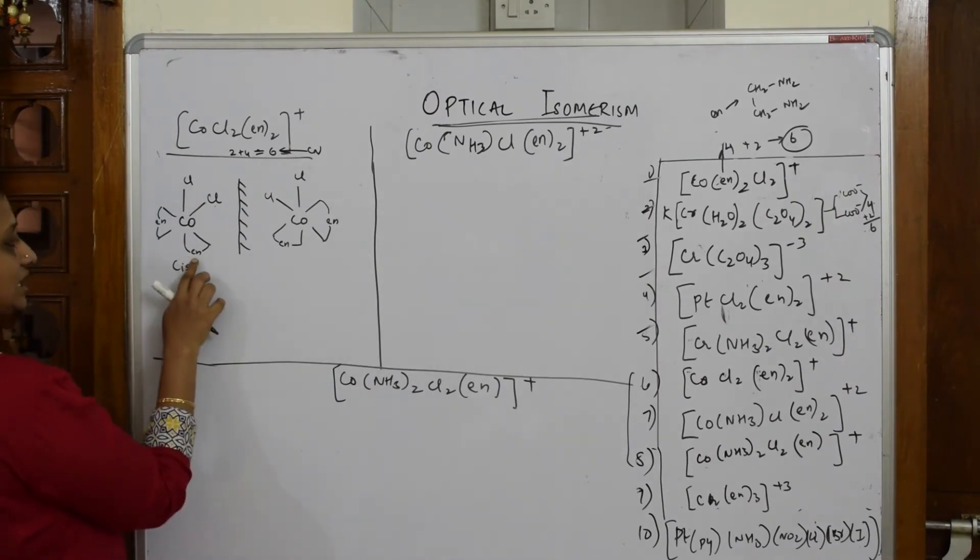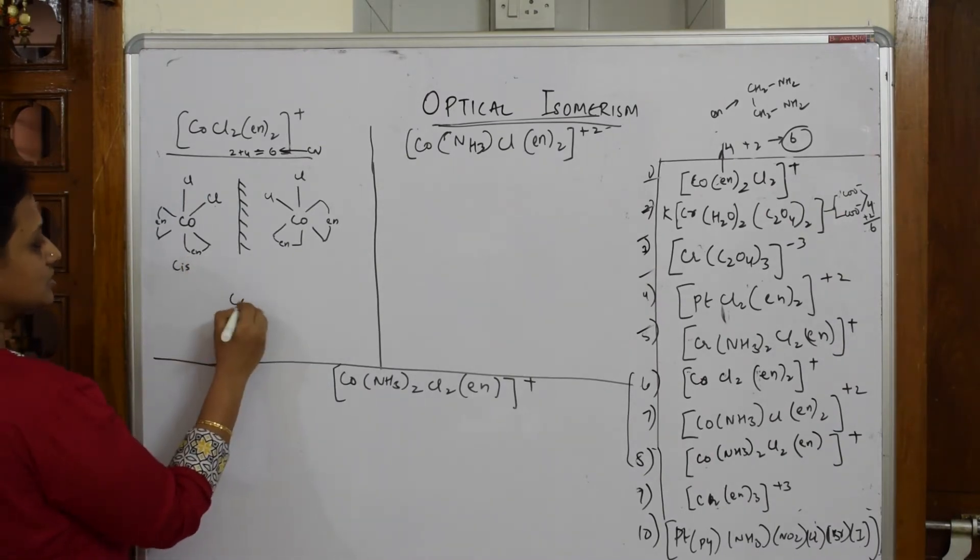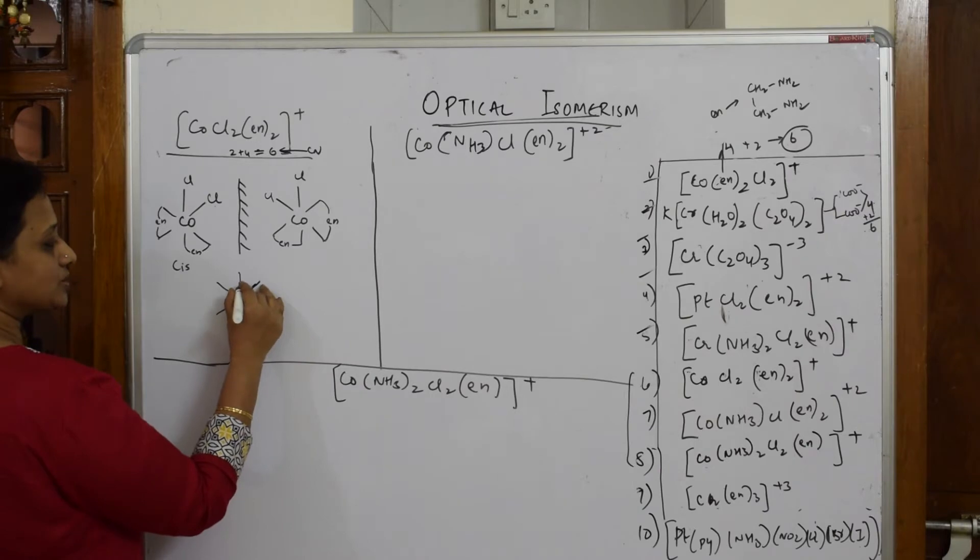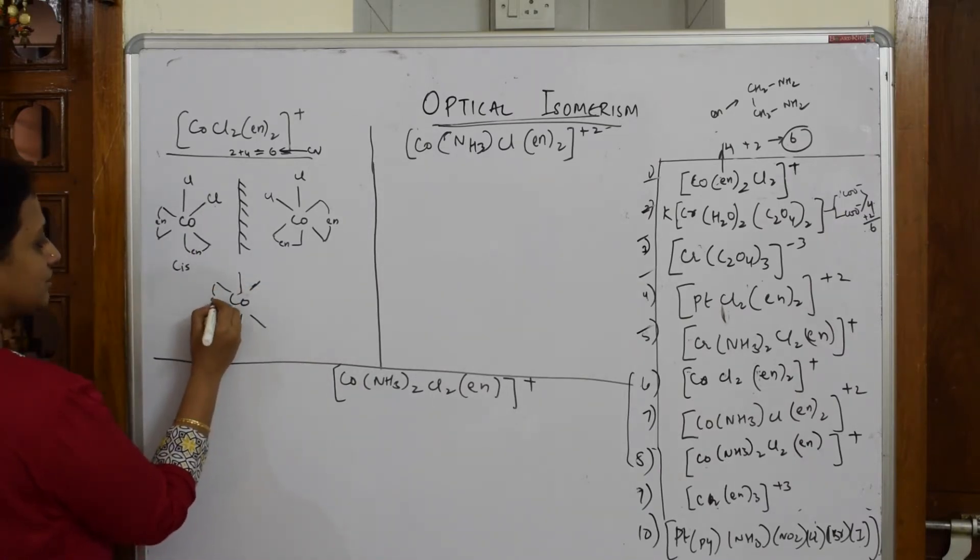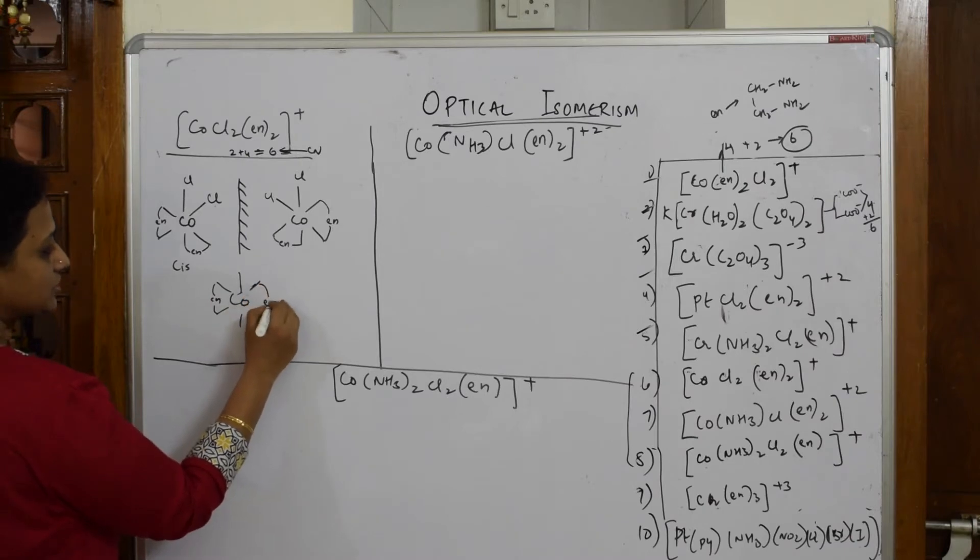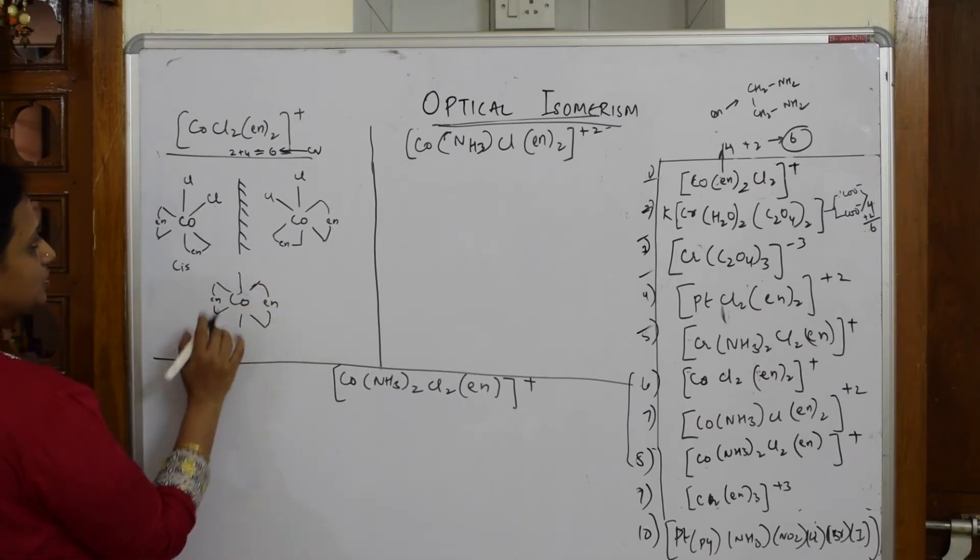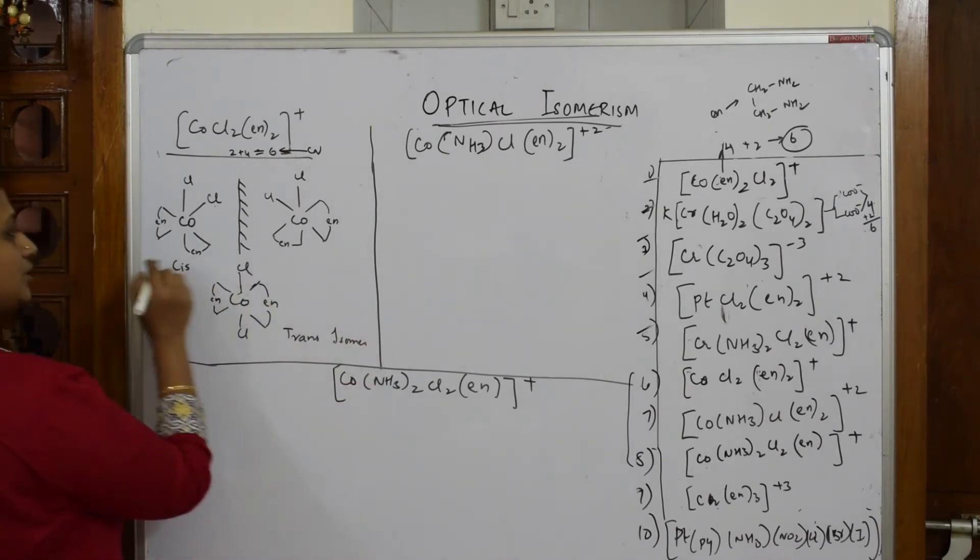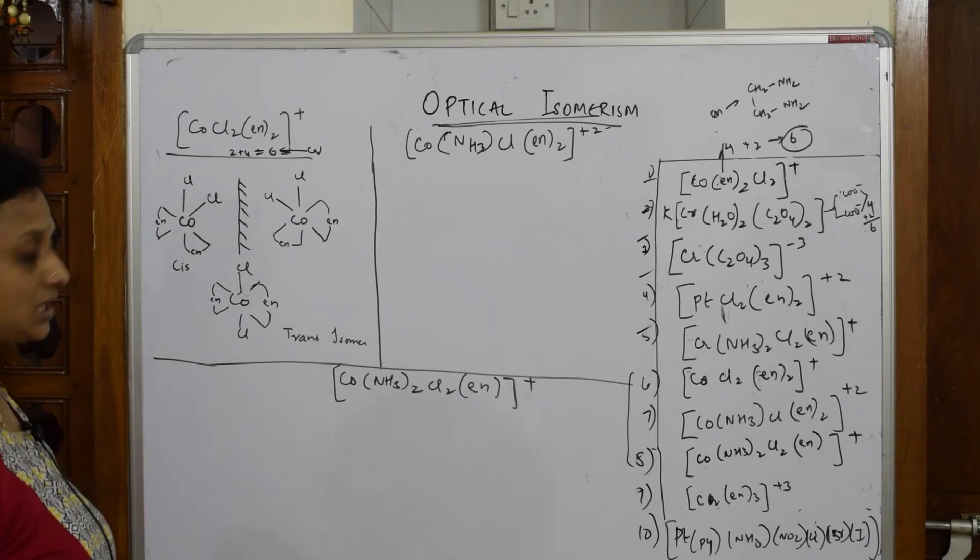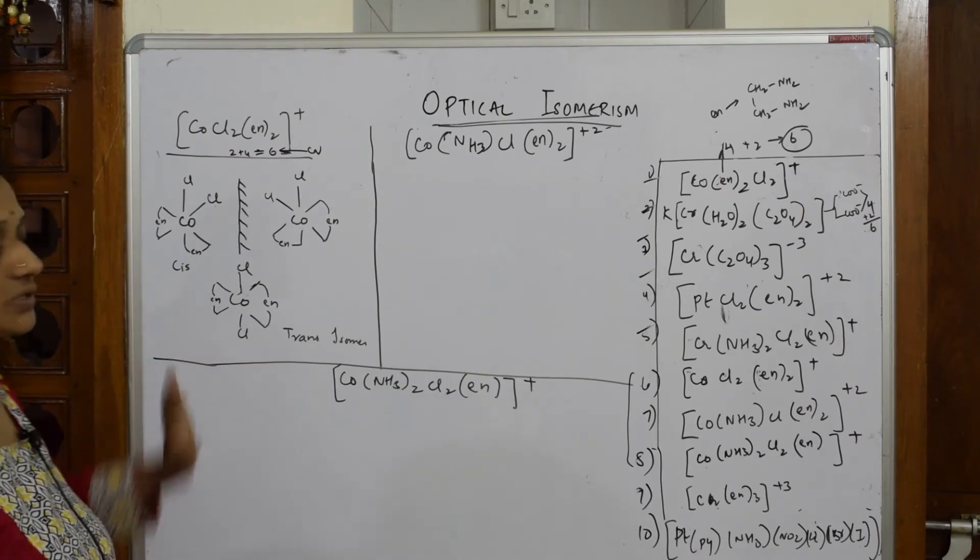Now I have to draw the trans isomer of this. Draw CO 1, 2, 3, 4, 5, 6. Trans is nothing but opposite side. See that your EN, EN - they will come and the position is in the opposite direction. See here, both are opposite. Cl is also opposite, so this is a trans isomer. What did I do? I drew the optical isomers and also the geometrical isomers. This is how we are going to draw both.